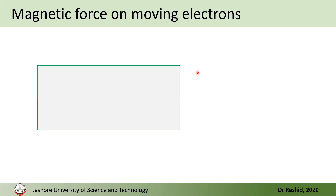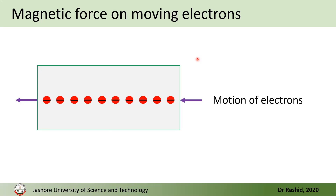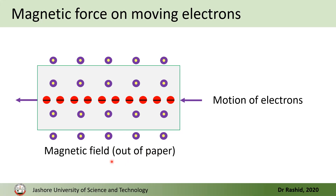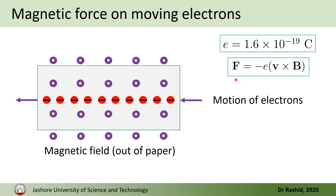Now let's assume this is a slab, with current flowing through it. Instead of current, let's consider the direction of the electrons — we know that the direction of current is opposite to the motion of electrons. So electrons are moving in this direction. If a magnetic field is applied such that its direction is out of the paper, these moving electrons will feel a force because of the magnetic field, and we will see that the electron will feel a force downward.